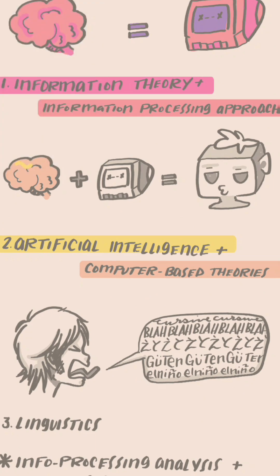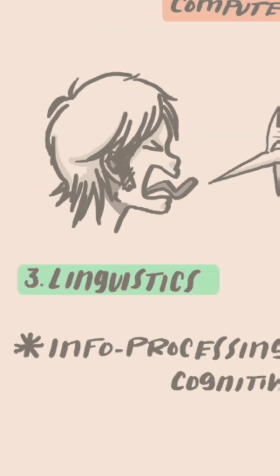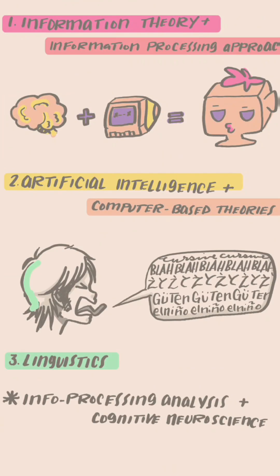Next is artificial intelligence and computer-based theories. The goal of AI is to translate human intelligence into digital form. Although computer-based theories have had a minimal impact on cognitive psychology as a whole, we have learned more from studying machine-based intelligence than computers have ever learned from us. The machine uprising is not yet upon us. Lastly is linguistics, which studies the structure of language.